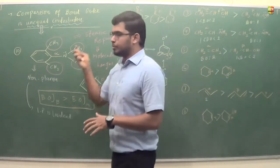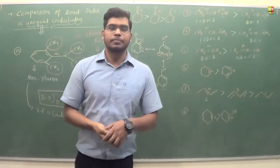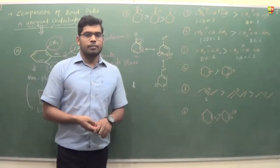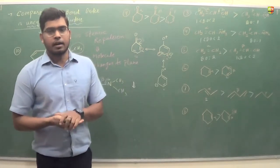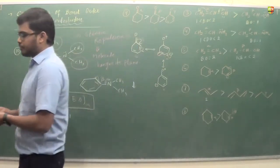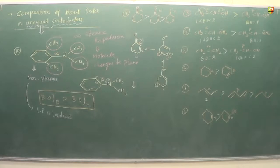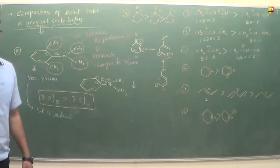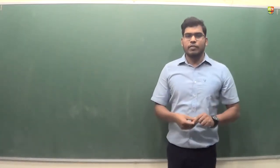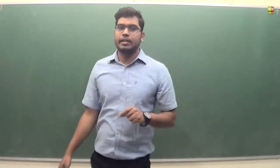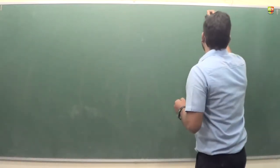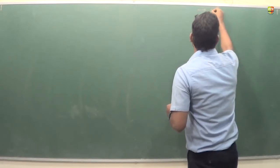So that covers the comparison of bond order for unequal contributors. Always keep in mind the steric repulsion case, as it is especially important. In the next session we'll see the second application of resonance, which is the mesomeric effect.